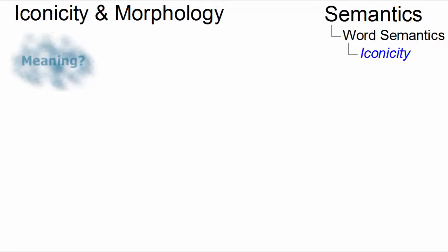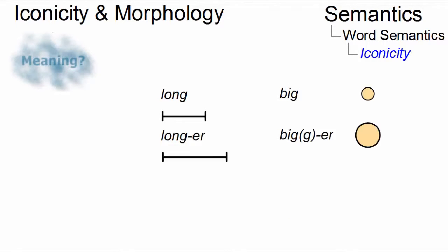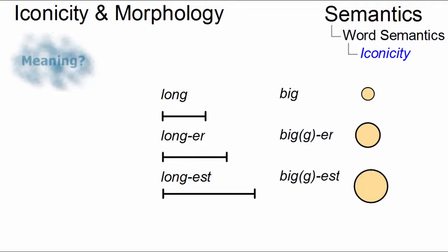In morphology, examples from degree adjectives often show that the most extreme degree of their meaning is iconically represented by the word with the greatest number of phonemes.